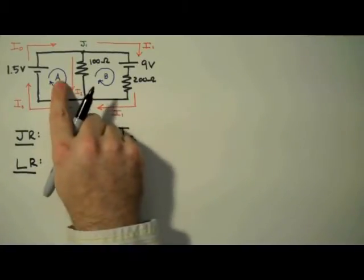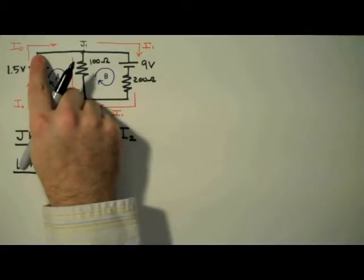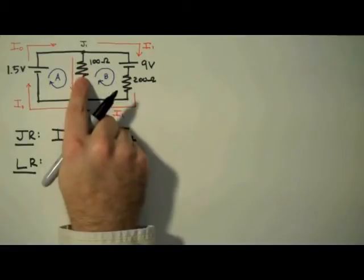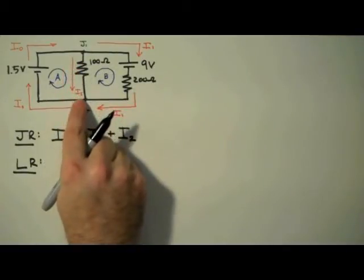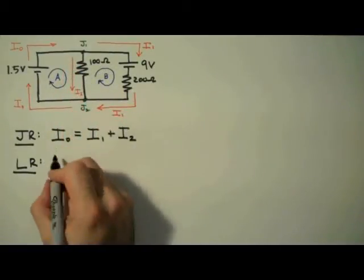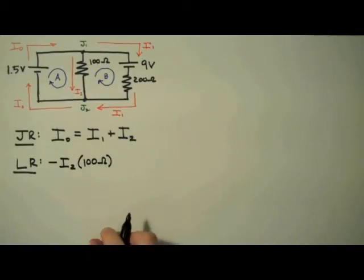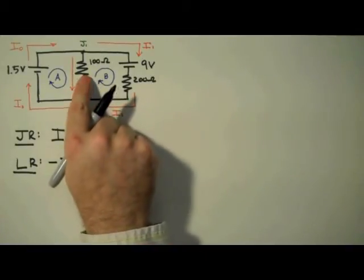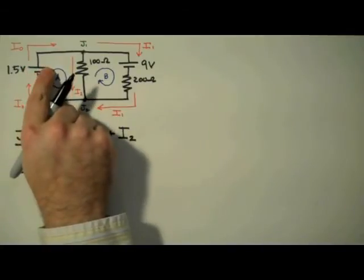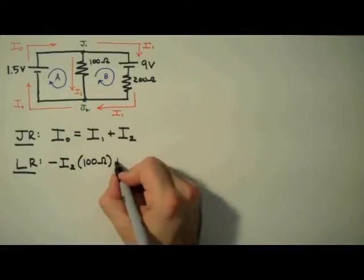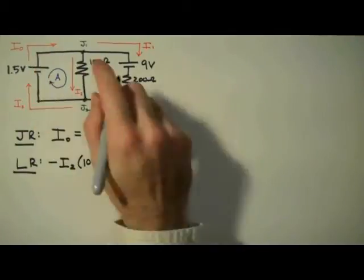Now we apply the loop rule to loop A, which states that the sum of the voltages around a closed loop is equal to 0. Starting in the upper left hand corner, we're going to move clockwise around loop A. The first component we get to is the 100 ohm resistor. Here we're traveling clockwise, so we're coming down this leg, moving with the direction of the current. This means we're going to have a voltage drop across the resistor, negative IR. So I write negative I2 times 100 ohms. Continuing clockwise, we get to our next component, which is the 1.5 volt battery. Here we're moving from low to high, negative to positive, which indicates a voltage lift, positive V. So I write plus 1.5 volts, and that's the last component in this loop, so I set it equal to 0.